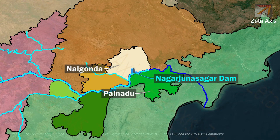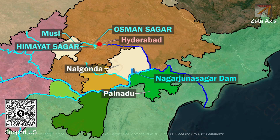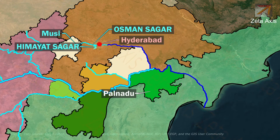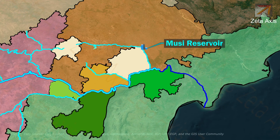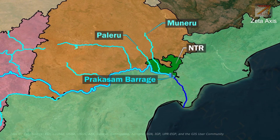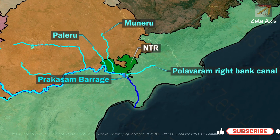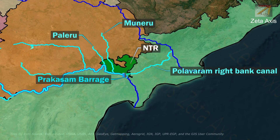The Krishna River then flows into Nalgonda district where it merges with the Musi River. The Musi River originates in Vikarabad district of Telangana. Hyderabad city is situated on the banks of the Musi River, which divides the historic city into two parts. The Musi River flows into Himayat Sagar and Osman Sagar, artificial lakes that act as reservoirs and once supplied water to the twin cities of Hyderabad and Secunderabad. A Musi Reservoir is also built on the Musi River in Nalgonda district. The Krishna River continues to flow in NTR district where the Palleru River and Munneru River join it. Prakasam Barrage is built in Vijayawada, NTR district of Andhra Pradesh. The Polavaram right bank canal connects the Krishna River with the Godavari River, and water from the Godavari River is brought into the Krishna River just before the Prakasam Barrage.